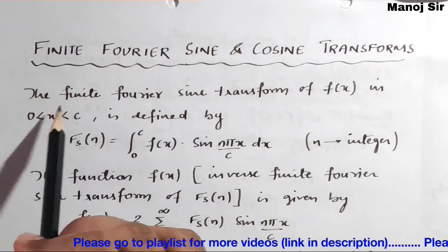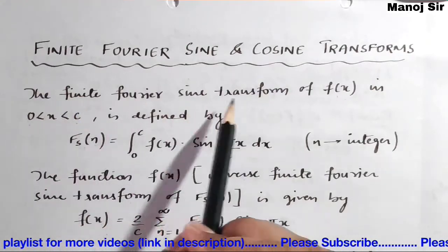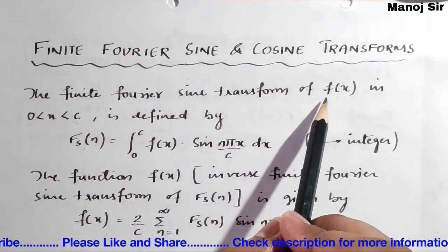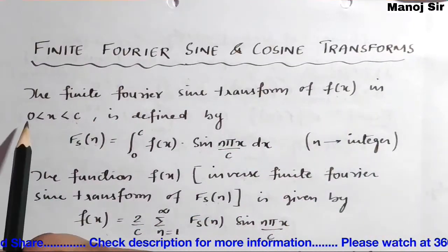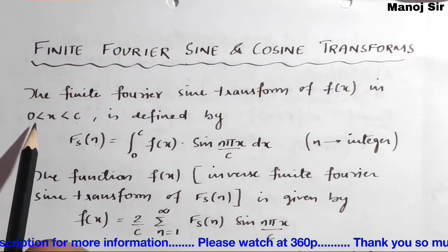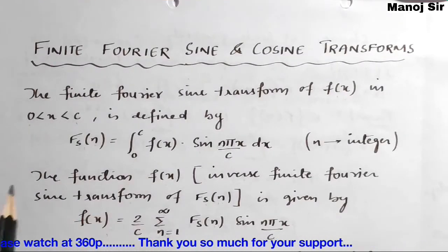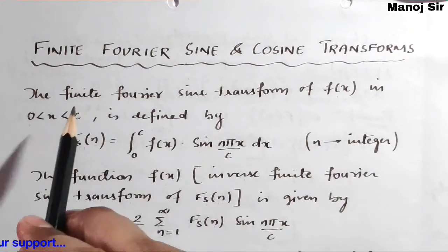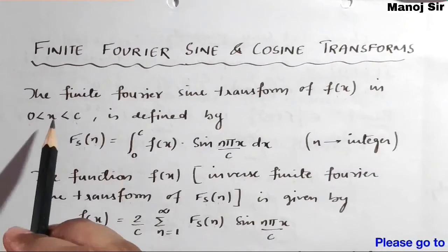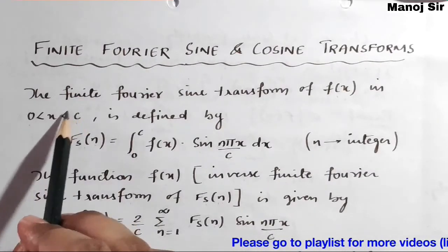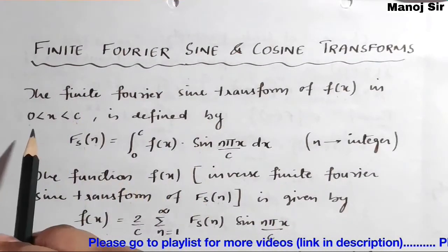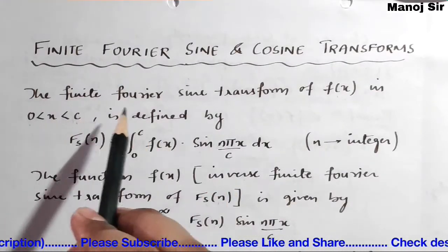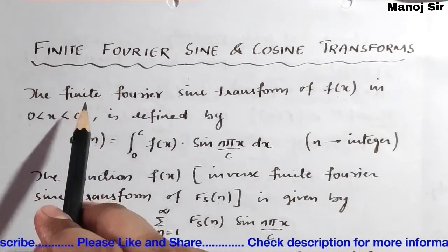Let us start the finite Fourier sine transform. The finite Fourier sine transform of any function f(x) is defined in the range zero to c. Here you can see the range is from zero to c, but in previous videos the limit was from zero to infinity — that was the infinite Fourier sine transform. Here the limit is from zero to c, where c may be any finite number.